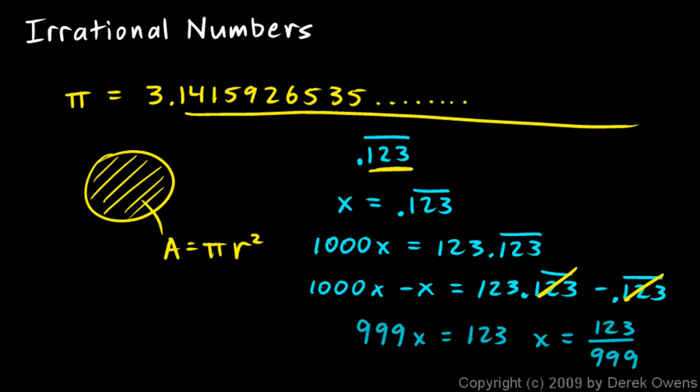These digits never repeat. They go on and on and on. So we can't have any number here to multiply by to use this technique. There are an infinite number of digits after the decimal point here and the number pi. So pi is an irrational number. It cannot be written as a ratio of two integers.